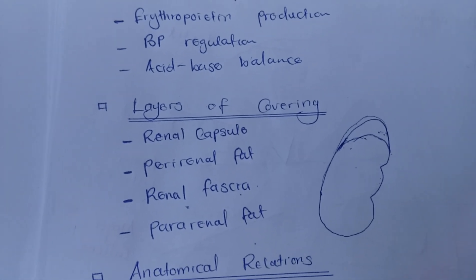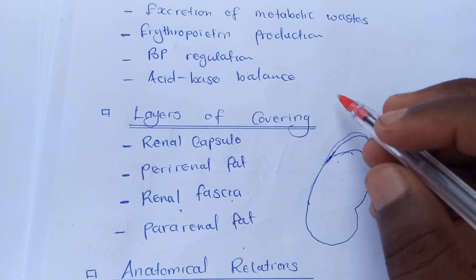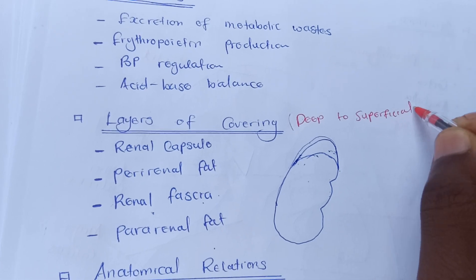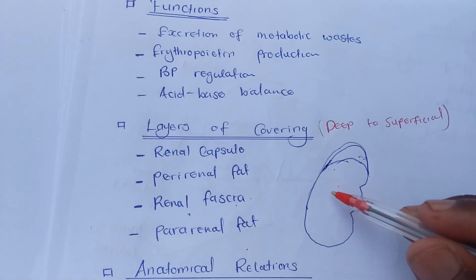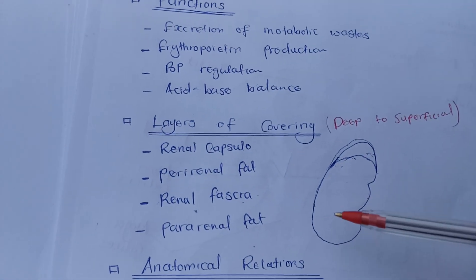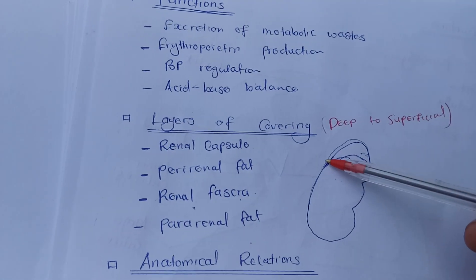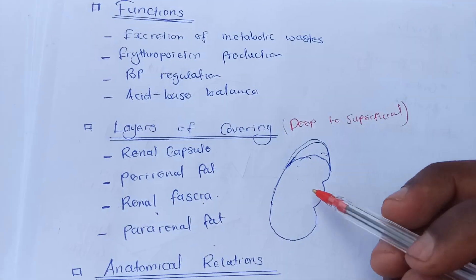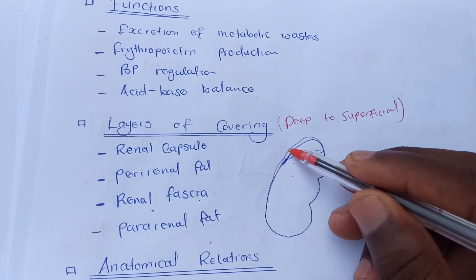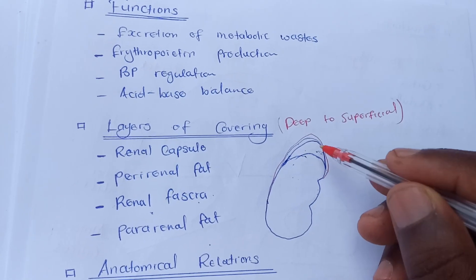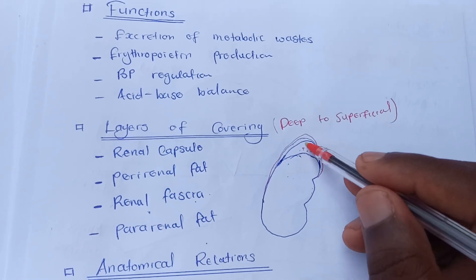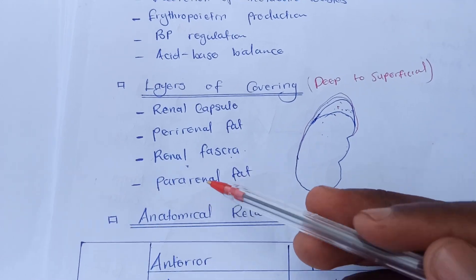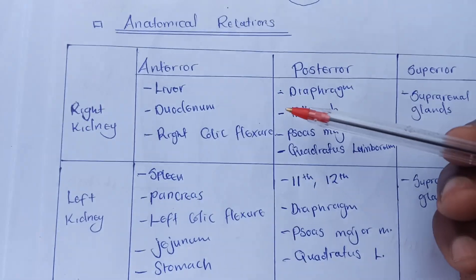What layers cover the kidneys? Starting from deep to superficial: the first layer is the fibrous capsule known as the renal capsule. The next layer is the perirenal fat. Then we have the renal fascia, which uniquely covers both the kidneys and is continuous going on to cover the adrenal gland — the suprarenal gland — on top of the kidneys. The outermost layer is the para-renal fat.